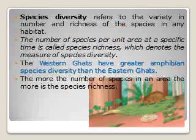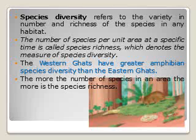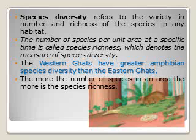Next, species diversity. Species diversity refers to the variety, number, and richness of species in any habitat — whether aquatic, terrestrial, or grassland. The number of species per unit area at a specific time is called species richness, which also denotes species diversity.